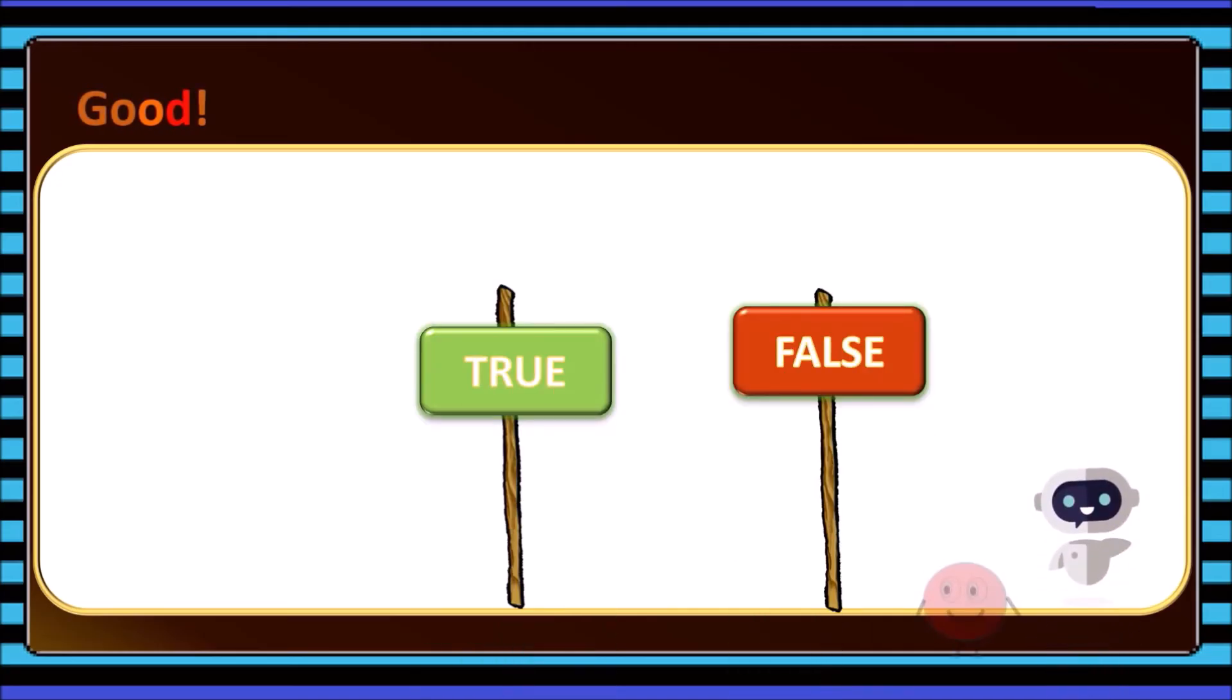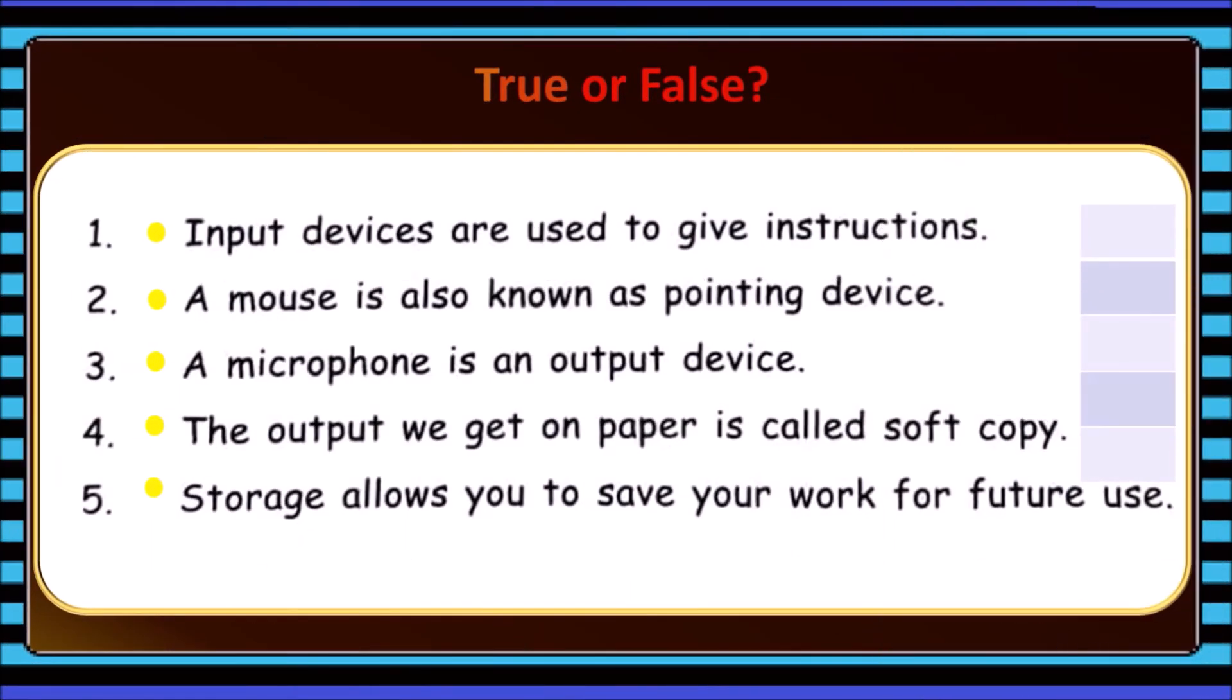Okay. Now let me see how many of these are true and which are false. Input devices are used to give instructions. True. A mouse is also known as pointing device. True.